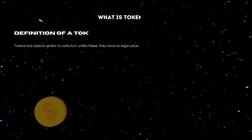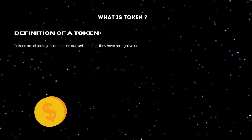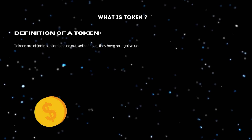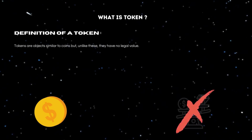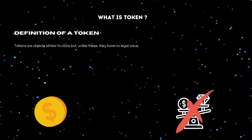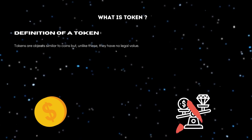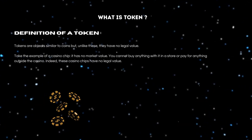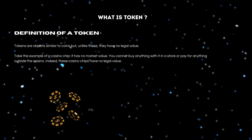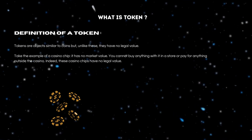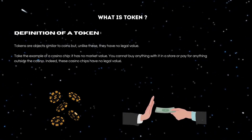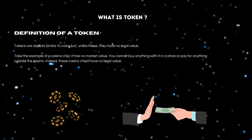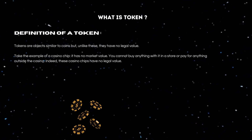A token can be defined as an object similar to coins, but unlike these coins, tokens have no legal value. Take the example of a casino chip — a casino chip has no market value; you cannot go and buy in a store with a casino chip, except in the casino.